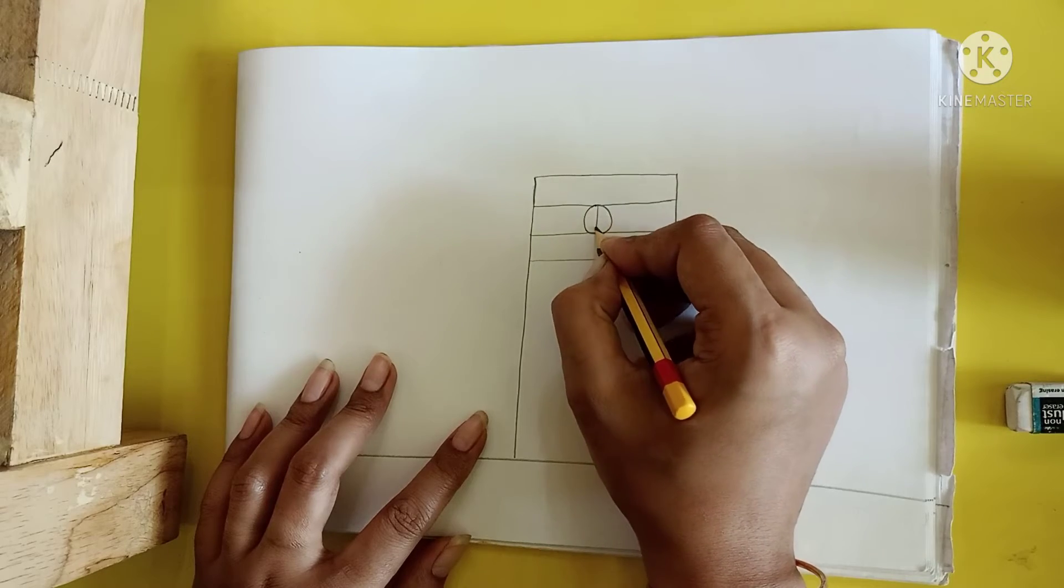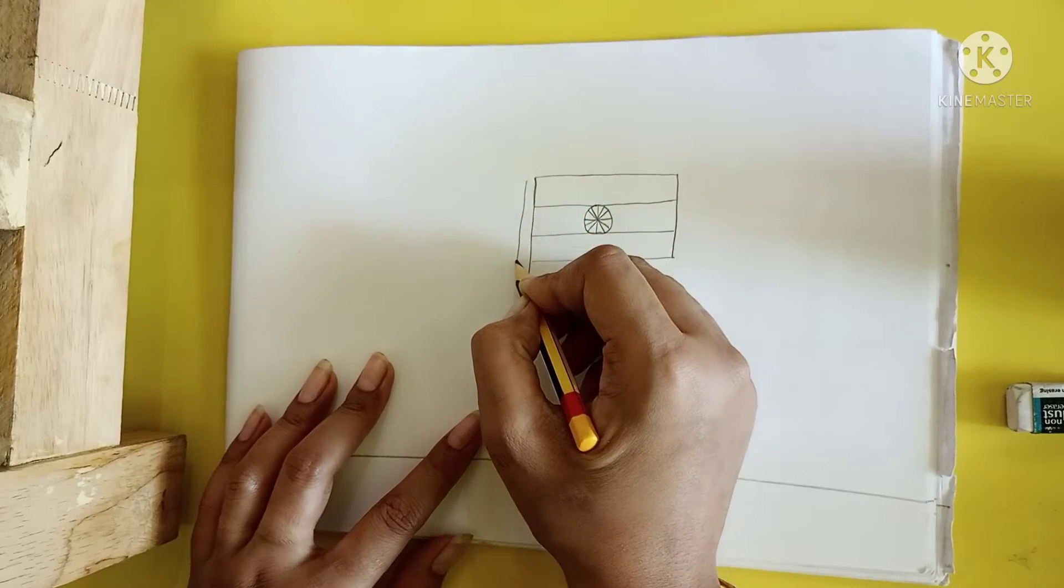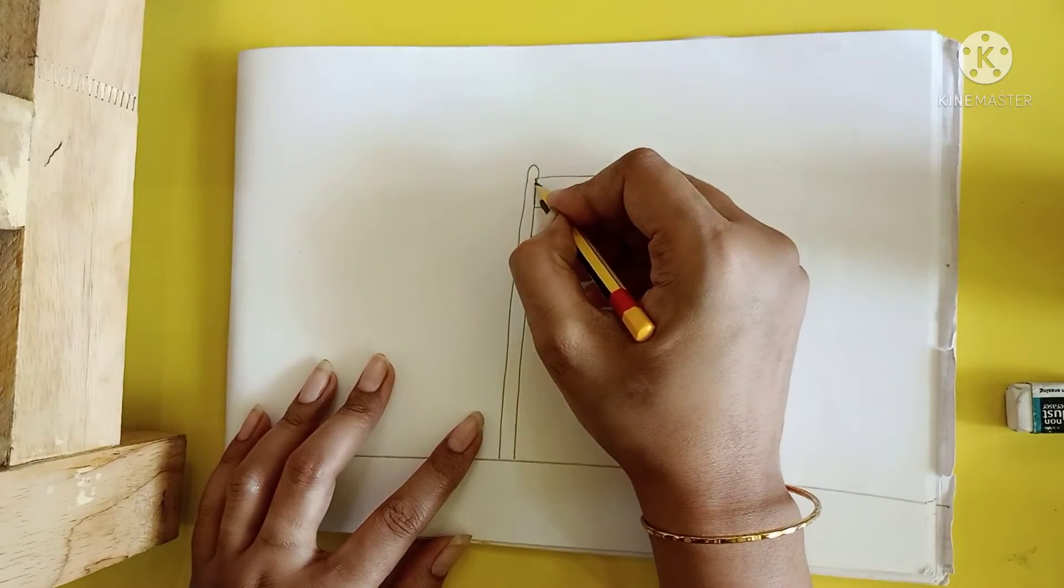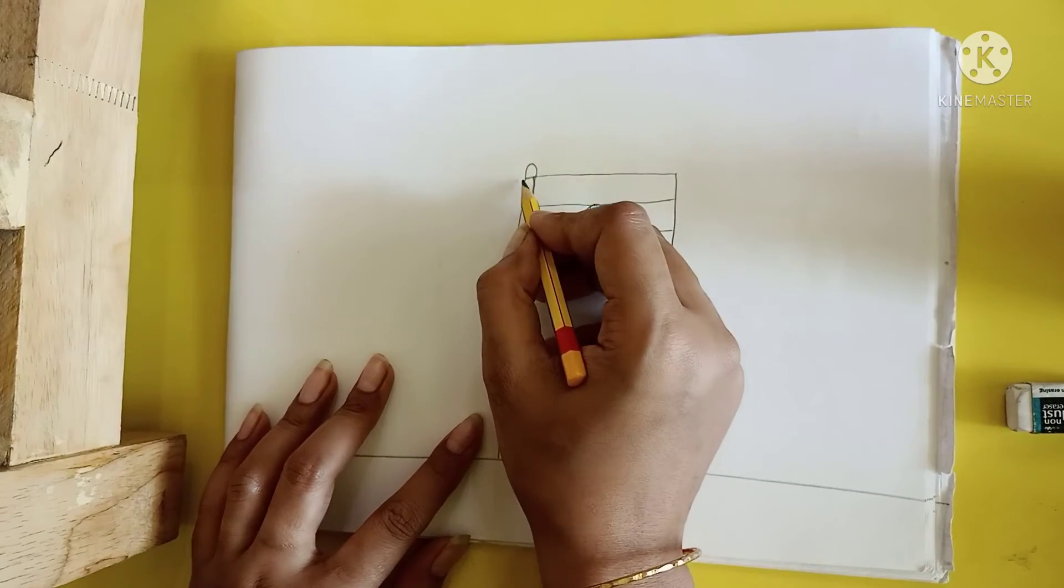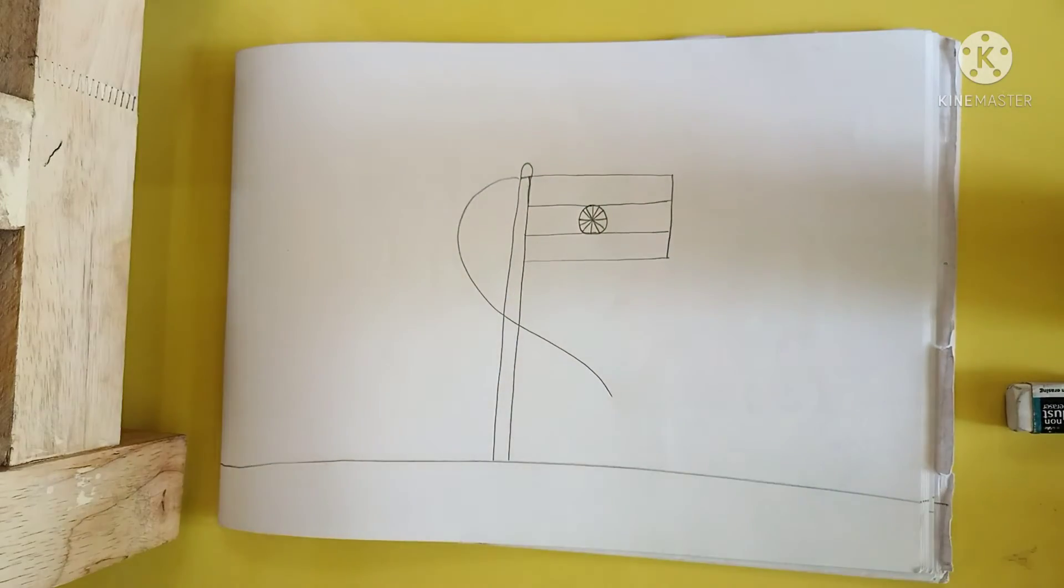Now make Ashok Chakra like this. Now make one more standing line in this side like this. Make row like this.